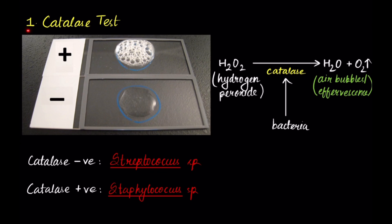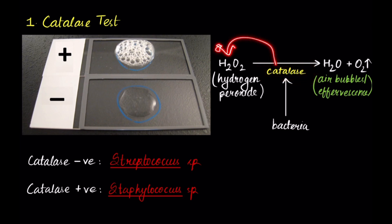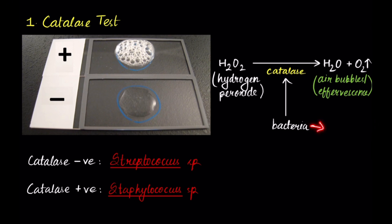The first one is the catalase test. In the catalase test, you take a slide and on this slide you put the reagent — hydrogen peroxide. You inoculate a bacteria into the reagent. If the bacteria produces catalase enzyme, it is able to metabolize this reagent and break it down into water and oxygen. The production of oxygen is visible in the form of air bubbles or effervescence. If air bubbles are seen, the bacteria shows a positive catalase test.